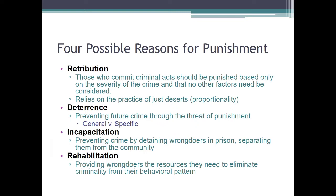Deterrence means that you punish people because, by punishment, you will prevent future crime. There are two types of deterrence. General deterrence means you're seeking to prevent everybody from doing a crime in the future. Specific deterrence means you're seeking to prevent the person you're currently dealing with from committing crimes in the future. Incapacitation is the idea that — whether or not deterrence works or retribution is right — we can remove a person from society, separate them physically from the community, and prevent any problem.